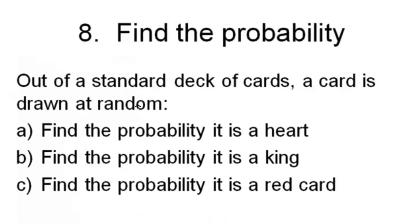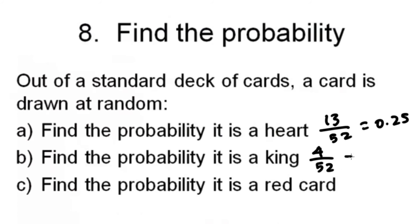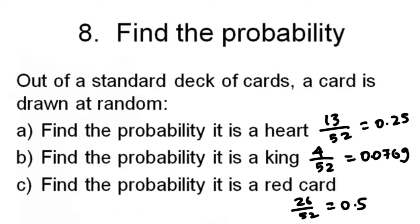From a standard deck of 52 cards, find the following probabilities. A heart: there are 13 heart cards, so 13 divided by 52 equals 0.25. A king: there are 4 kings, so 4 divided by 52 equals 0.0769. A red card: two suits are red, each with 13 cards, so 26 divided by 52 equals 0.5.